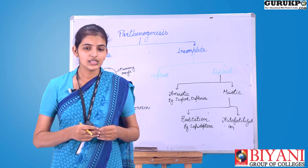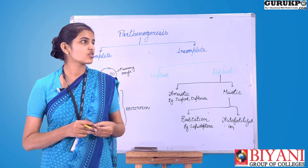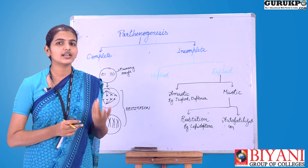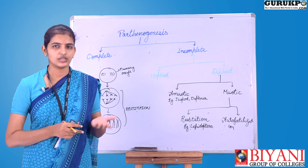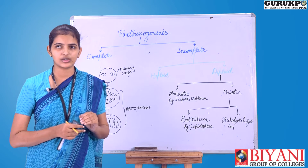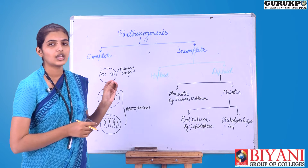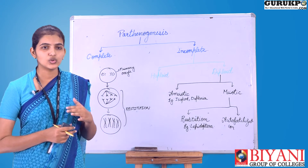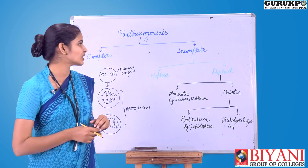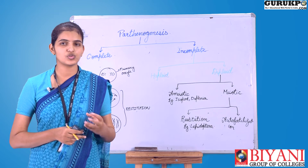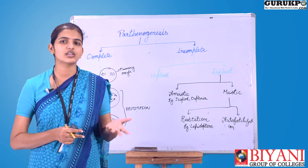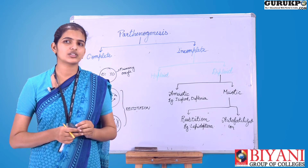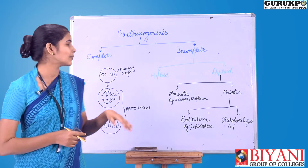Some animals undergo parthenogenesis during harsh conditions, but usually it does not occur naturally. Animals that undergo natural parthenogenesis are said to exhibit complete parthenogenesis, because they have no other form of reproduction such as sexual or asexual. Parthenogenesis is generally considered a form of asexual reproduction, though sometimes it is differentiated because the organism formed contains the same number of chromosomes as the parent, whereas in typical asexual reproduction chromosome numbers may be reduced.